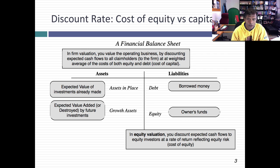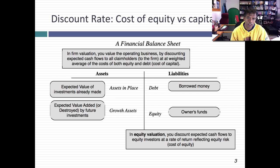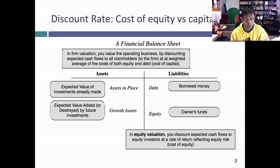There are two ways I can frame a valuation. I can value the entire business by taking the cash flows from all of your assets — assets in place and growth assets — and discounting them back at a weighted average of your cost of equity and your cost of debt, which is the cost of capital. What I get then as a present value would be the value of the operating business. The other way is to focus just on equity investors, look at their cash flows, and discount them back at a cost of equity.